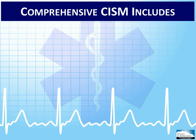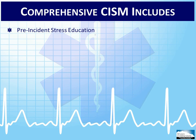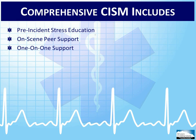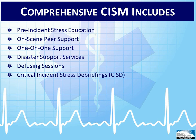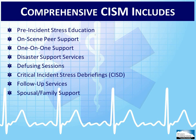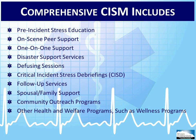Critical Incident Stress Management is a process by which employers use education and other resources to prevent stress, if possible, and to help employees deal with stress when it occurs. For many employers, CISM is a part of their employee assistance program whereby employees have access to trained professionals to assist them in dealing with both personal and job-related stressors. A comprehensive CISM includes pre-incident stress education, on-scene peer support, one-on-one support, disaster support services, diffusing sessions, critical incident stress debriefings, and follow-up services. The program should also recognize the need to provide spousal and family support for the EMT, as well as community outreach and other health and welfare programs.